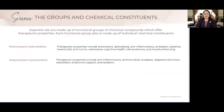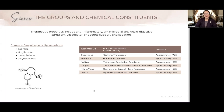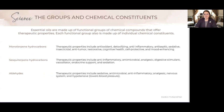Let's look at our second category — sesquiterpene hydrocarbons. The therapeutic properties here include anti-inflammatory, antimicrobial, analgesic, digestive stimulant, vasodilator, endocrine support, and sedation. The oils highest in sesquiterpene hydrocarbon constituents are cedarwood, patchouli, vetiver, ginger, ylang-ylang, and myrrh. So if you're looking for properties that are anti-inflammatory, antimicrobial, analgesic, and so on, you know to look for oils under this category.